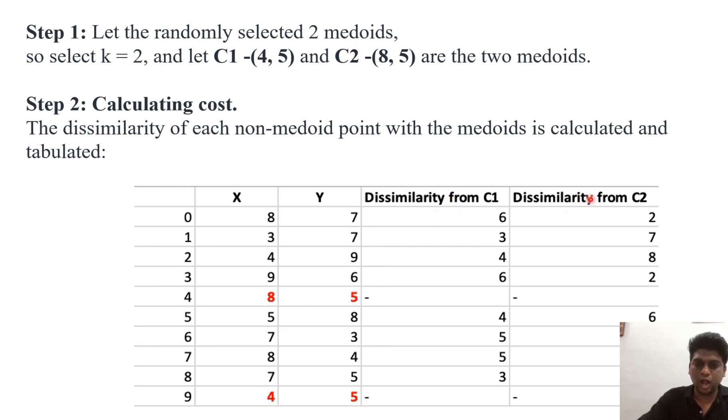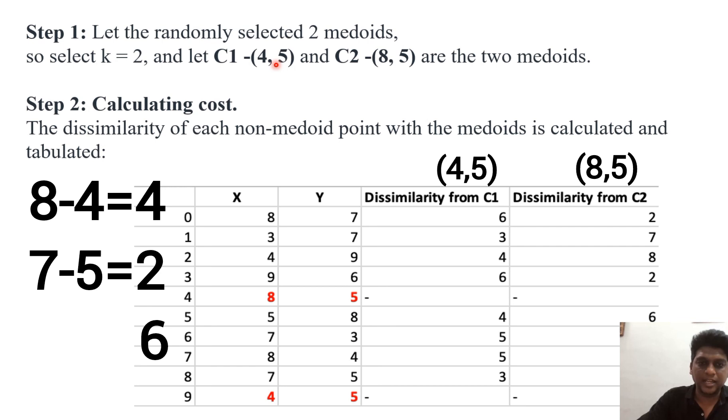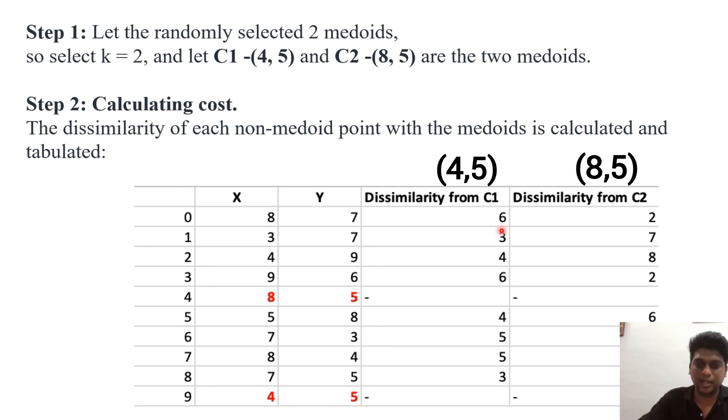Then in these two columns we have to find out dissimilarity from C1 which is this 4,5 and dissimilarity from C2. You look at this point you have to compare these XY points with this Medoid C1 and the Medoid C2. Now consider this point 8,7. We have to minus this 8,7 with this 4,5. 8 minus 4 that is equal to 4 then 7 minus 5 that is equal to 2. So 4 plus 2 is equal to 6.